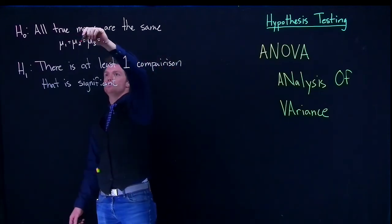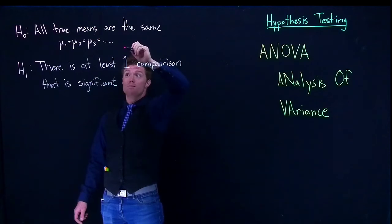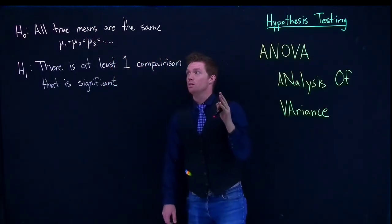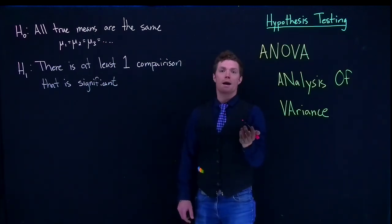Like if we were to compare mu1 to mu2, that one might be different; mu1 to mu3, that one might be different; or mu2 to mu3. So we have those three possible outcomes or comparisons—they're called pairwise comparisons.